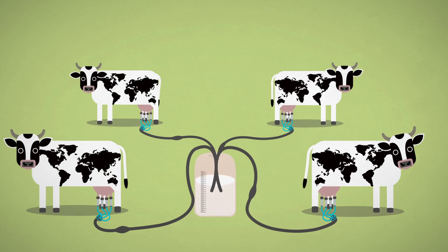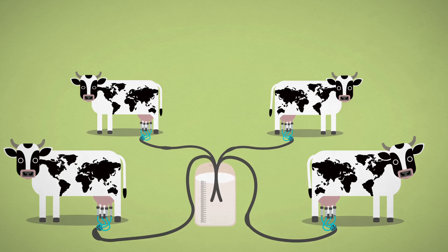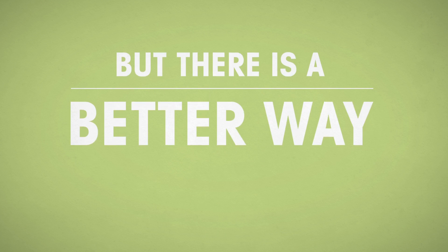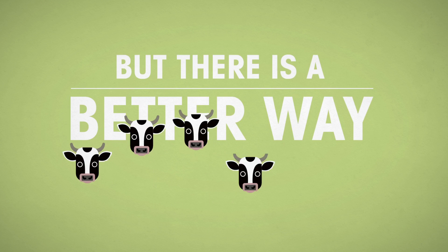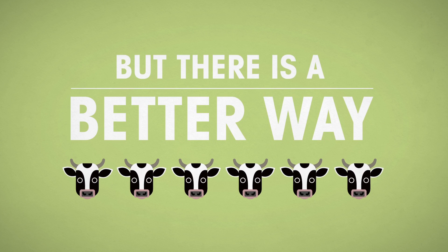One solution would be to get more cows. But space and resources are limited. But there is a better way. If each cow produced just over half a glass more milk each day, it will be enough to meet our growing need.